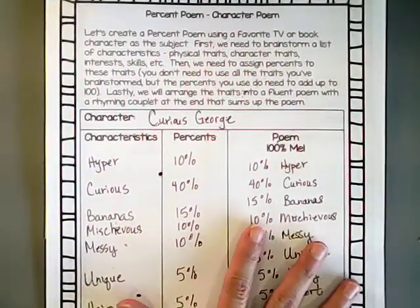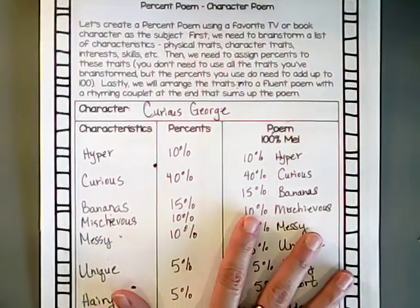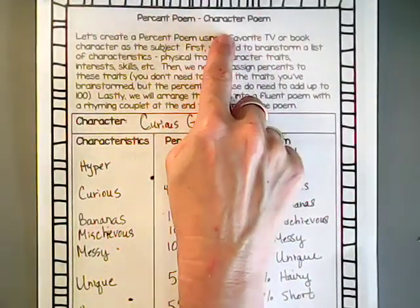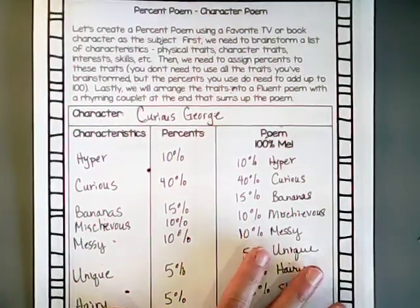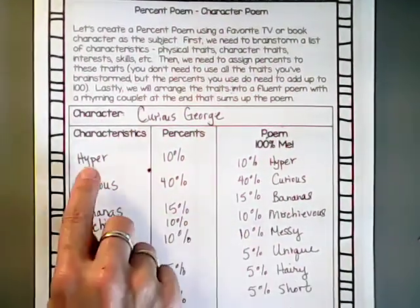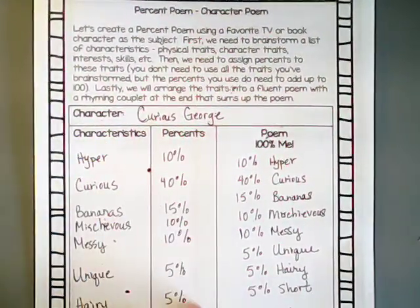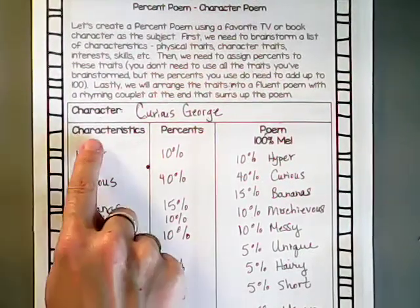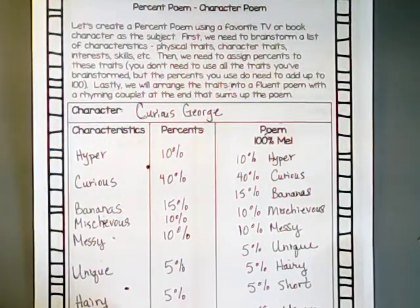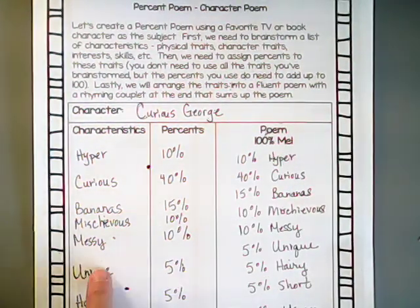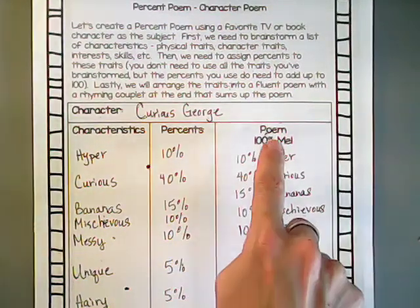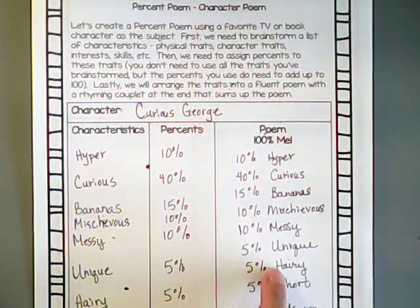On the first page, you don't have to fill anything in because this is the character poem example. This was my example using Curious George. You'll notice that in the Google Slides I had already filled out the characteristics and the percents, but we didn't do this last part yet — and that part is really just taking those two ideas and rewriting them over here.